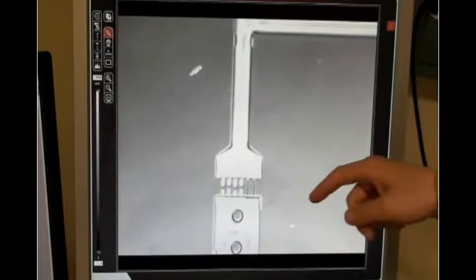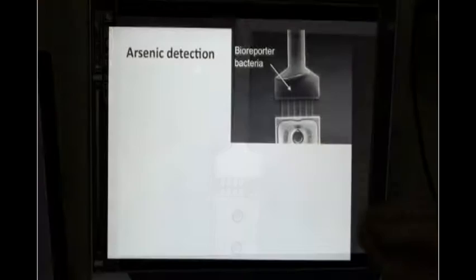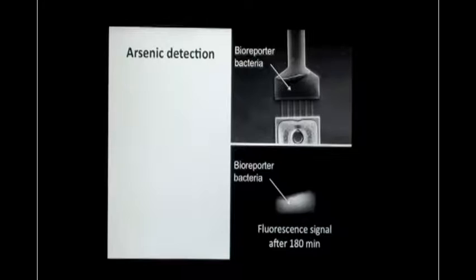In the measurement zone there is a filter that retains the cells while the arsenic solution can pass through. The fluorescence intensity produced by the cells increases with time, and after 180 minutes we can determine the arsenic concentration present in the aqueous solution.